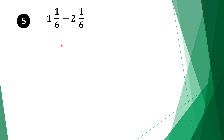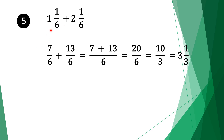Let's start with question 5. We have 1 and 1 sixth plus 2 and 1 sixth. Again we convert mixed fractions to normal fractions. We multiply our denominators: 6 times 1 is 6, plus 1 is 7. Bring the denominator 6 and the plus sign. Do the same for the second fraction: 6 times 2 is 12, plus 1 is 13. Bring the denominator 6. Now we have normal adding fractions.